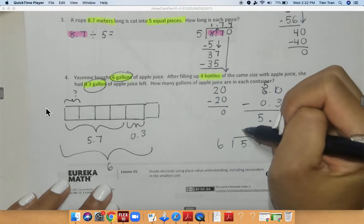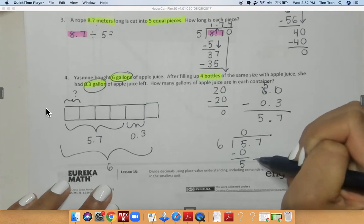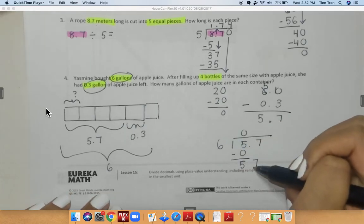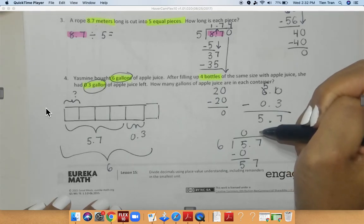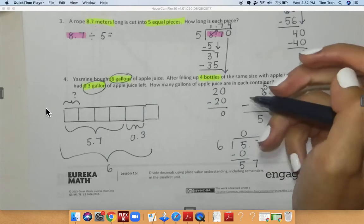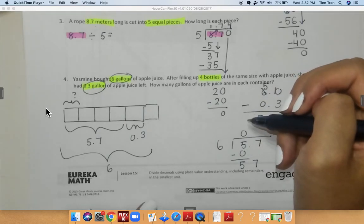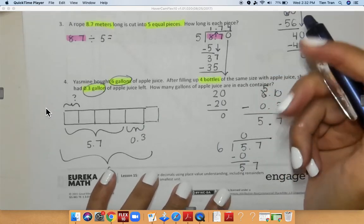6 can go into 5 zero times. 5 minus 0 is equal to 5. Bring down my 7. 6 can go into 7 how many times? 6 can go into... Oh, sorry. Not 7. 57. 6 can go into 57. Oh, wait. I just realized something.